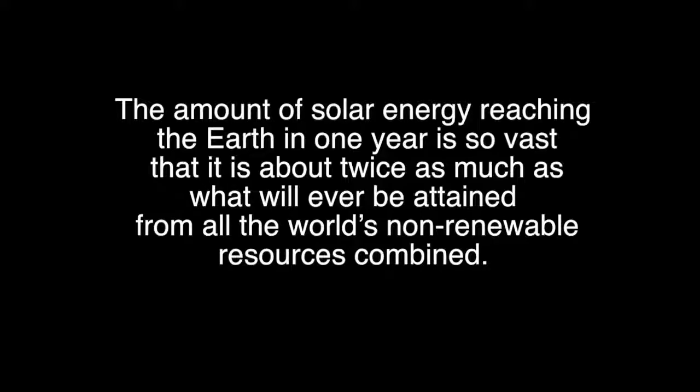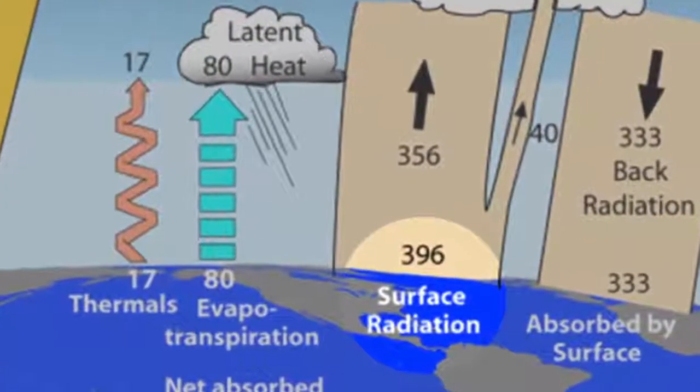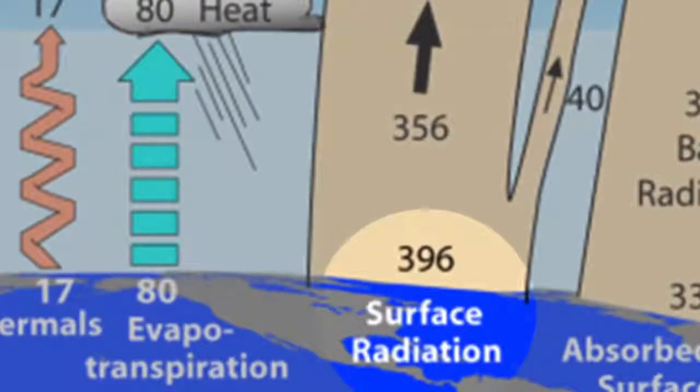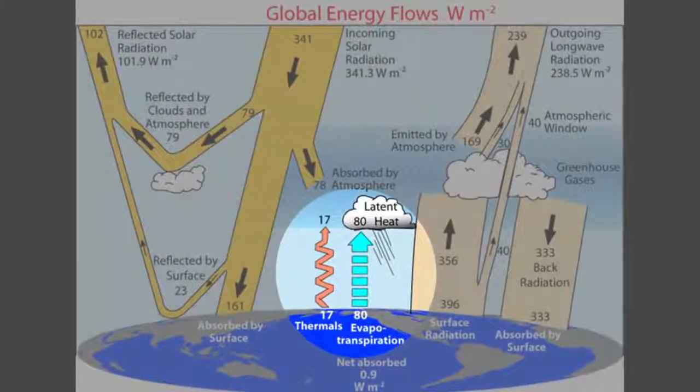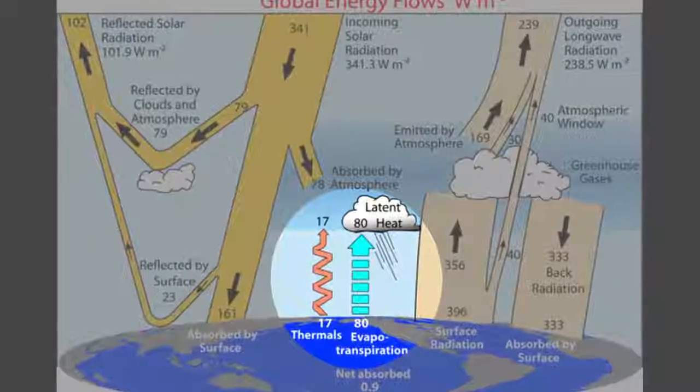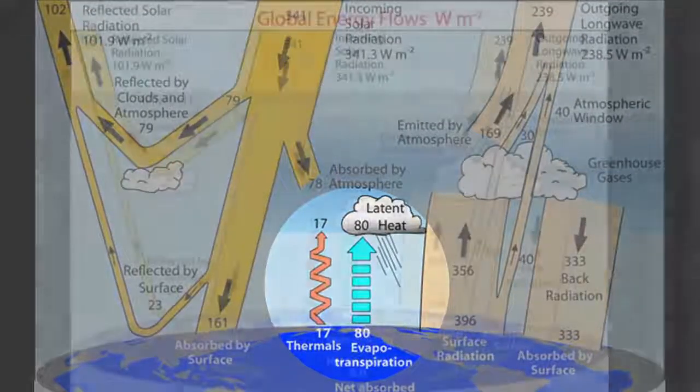To ensure Earth doesn't overheat by constantly absorbing more and more energy, the Earth emits infrared long-wave radiation, heat, back to the atmosphere. It also emits energy through thermals and evapotranspiration, where energy evaporates water on Earth's surface and then releases that energy to the atmosphere during condensation.